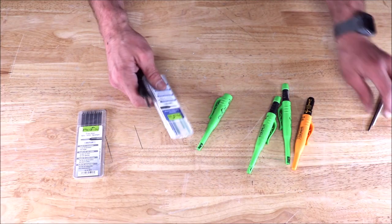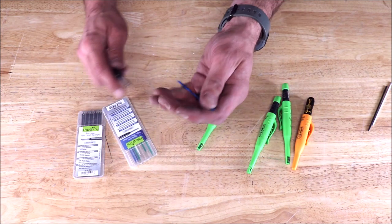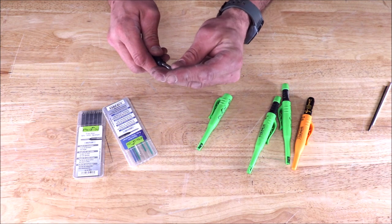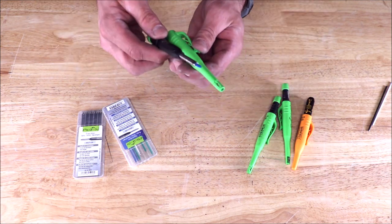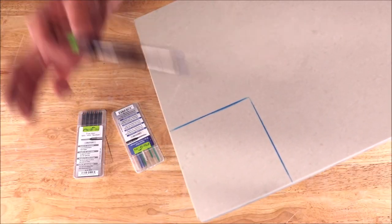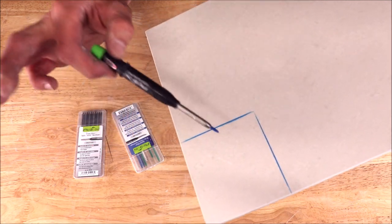You also have other colors in here like blue, which helps marking on very light white tiles, whether rough or high gloss. And these refills are water jet resistant, so they won't wash away with your wet tile saw.